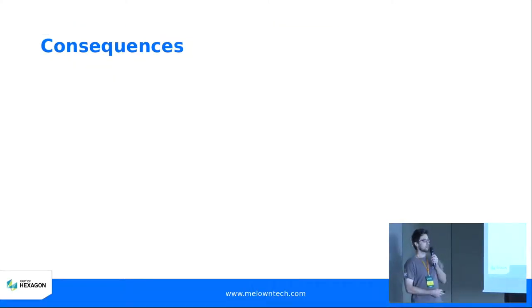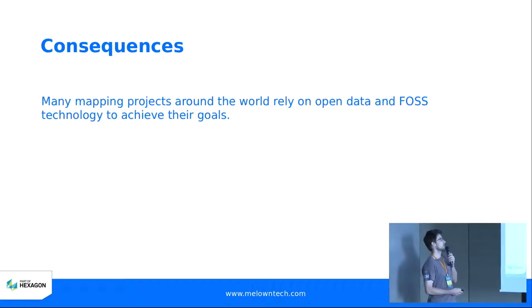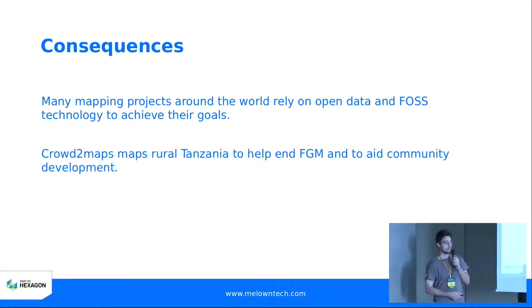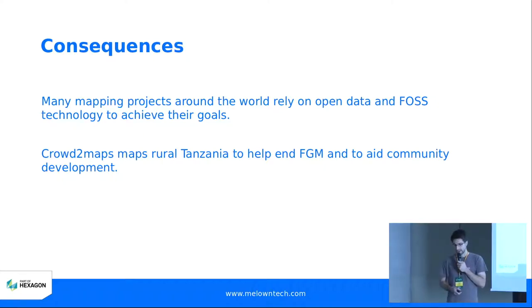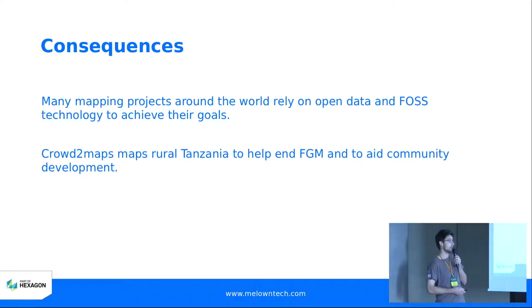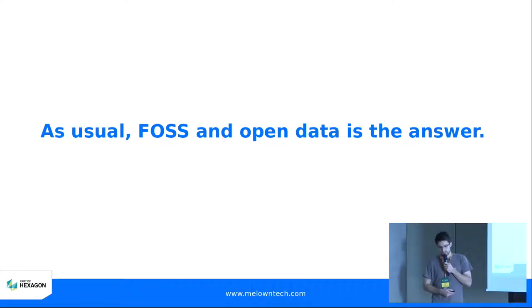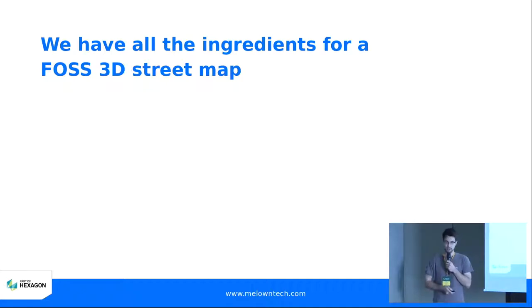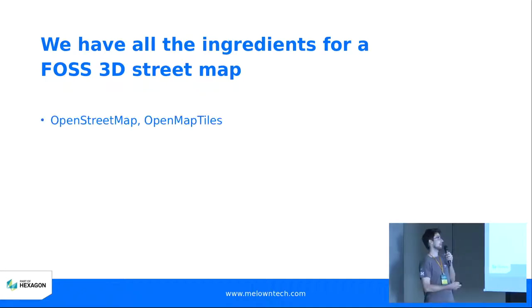We need some open source approach when we want to visualize this kind of data. The consequence of this approach is that you have many mapping projects around the world that rely on FOSS technology and open data to achieve their goals. For example, the mentioned Crowd2Maps project maps rural Tanzania with high goals like helping to end female genital mutilation and to aid community development. These are pretty nice goals. As usual, FOSS and open data are the answer.